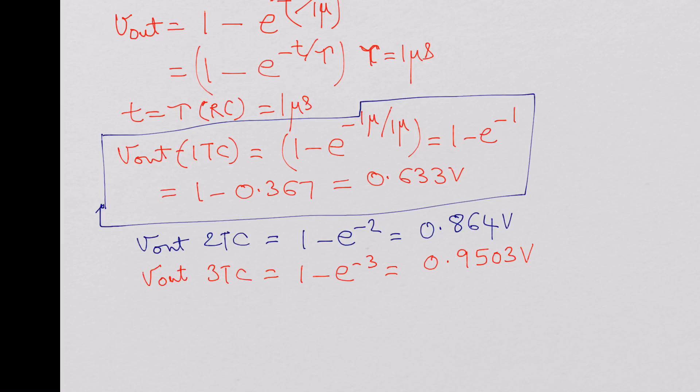You can go ahead and calculate and you would see these values. V out at 4 time constants is 1 minus e power minus 4, which is 0.9817 volts. So it's almost close to 1 volt.